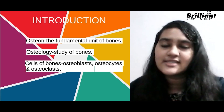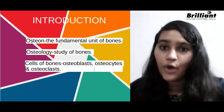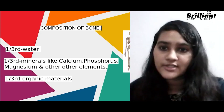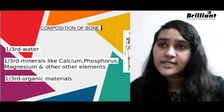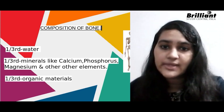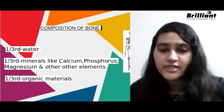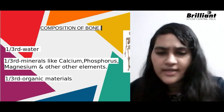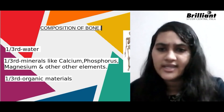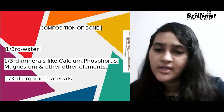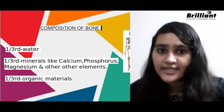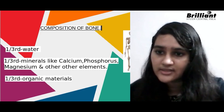Next is the composition of bone. It consists of one third water, one third minerals like calcium, phosphorus, magnesium, and other elements, and the remaining one third is occupied by organic materials.